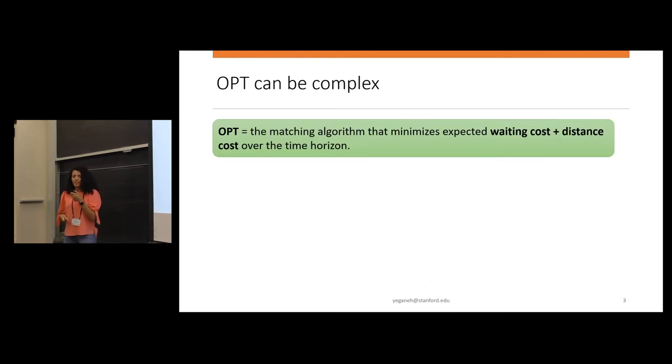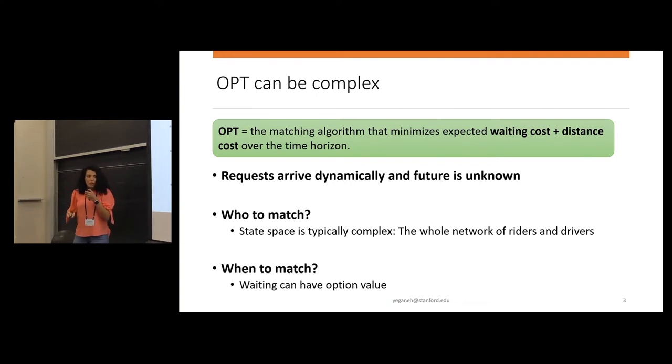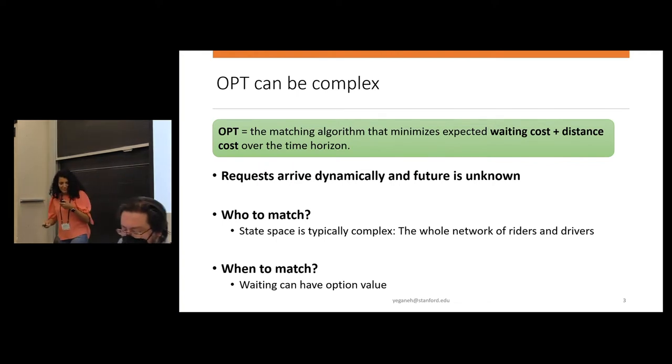So the optimal algorithm in this model can be very hard in general. The optimal algorithm is going to minimize the expected waiting cost plus the distance cost over the infinite time horizon. It's going to be hard because we have the question of when a rider arrives, who are we going to match it to? Should it be the closer driver, or maybe I should save the closer drivers for future riders. Or it's also the question of when to match.